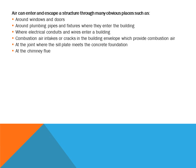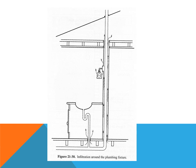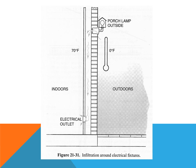Air can enter and escape the structure through many obvious places. Anything that can open and close, any penetration through the house, can cause air to leak in or out. Even penetrations in a crawl space — such as plumbing going through — if there's a pressure difference from inside to outside, air can leak in. Electrical fixtures on walls also allow air leakage and need to be sealed. If you weatherize a house, these are always points to consider. A big temperature difference between indoors and outdoors, or any type of penetration, can cause infiltration.